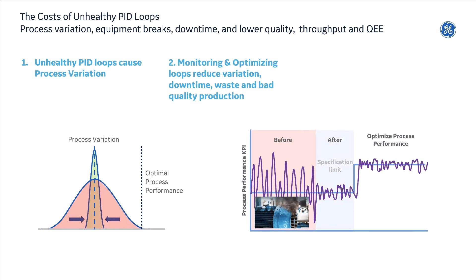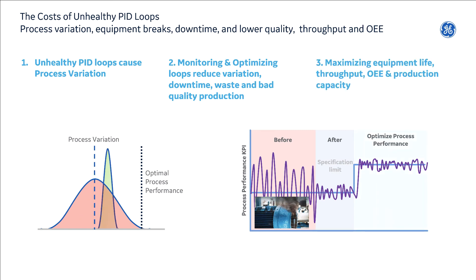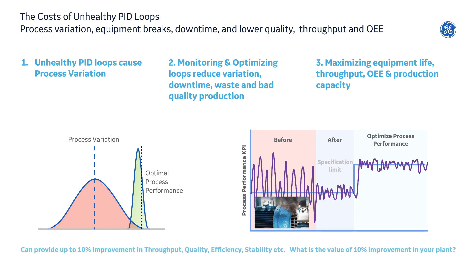Automation, control, and process engineers can optimize and continuously monitor loops and optimize their performance, and so reduce variation, downtime, waste, and bad quality production, and ultimately maximize the equipment life and the throughput of production capacity of their plants. This can ultimately improve performance in these metrics in manufacturing plants by up to 10%.